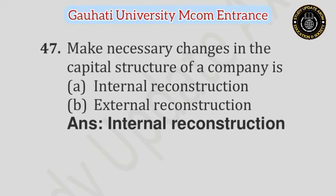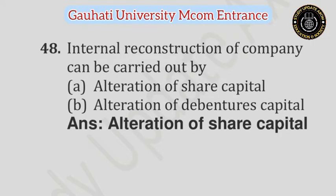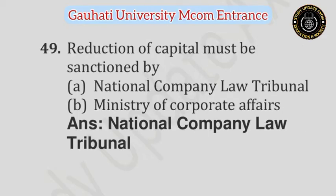Question number 47: Making necessary changes in the capital structure of a company is — Option A: Internal reconstruction, Option B: External reconstruction. Answer is Internal reconstruction. Question number 48: Internal reconstruction of a company can be carried out by — Option A: Alteration of share capital, Option B: Alteration of debenture capital. Answer is Alteration of share capital. Question number 49: Reduction of capital must be sanctioned by — Option A: National Company Law Tribunal, Option B: Ministry of Corporate Affairs. Answer is National Company Law Tribunal.